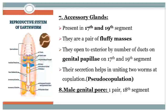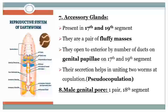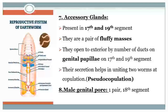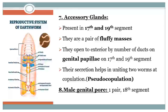Accessory glands. In the earthworm there are two pairs of accessory glands present, located on the 17th and 19th segments. These glands are fluffy masses and they open to the exterior by a number of ducts on the genital papillae on the 17th and 19th segments. The secretion of the accessory glands helps to unite the two worms during copulation, which is called pseudo-copulation — a term used for self-copulation.